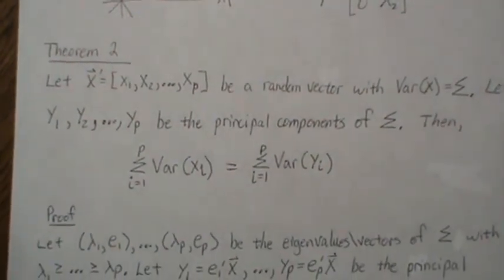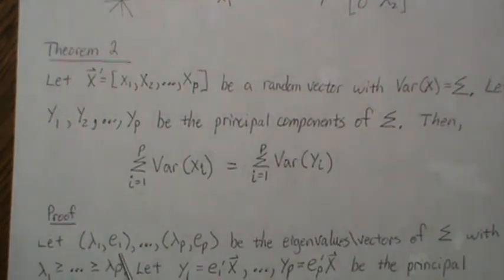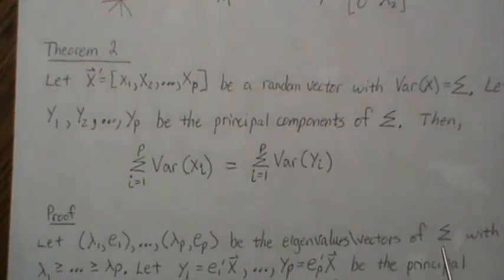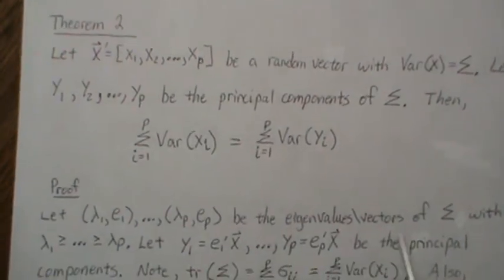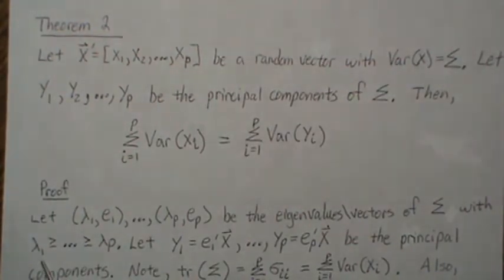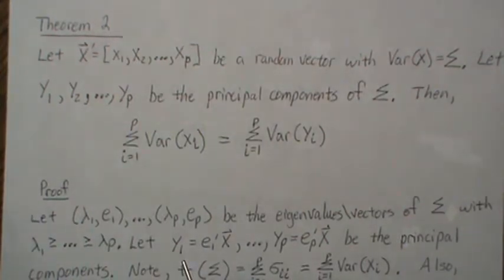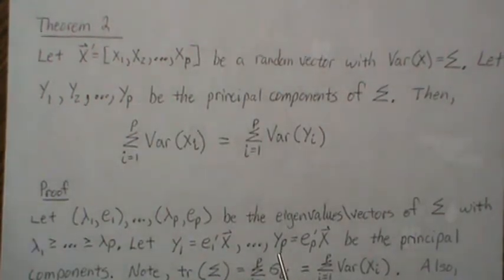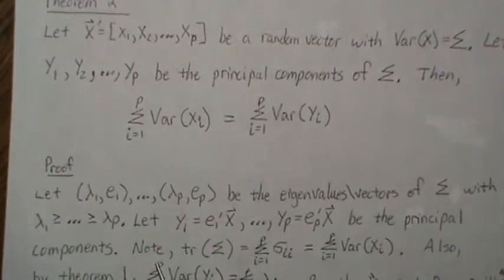The proof is this. We have tuples lambda 1, e1 through lambda p, ep — those are the eigenvalue-eigenvector pairs of the sigma matrix, the variance-covariance matrix. With ordered eigenvalues, we let lambda 1 be the largest and lambda p be the smallest. Then y1 is the first principal component, derived from the first eigenvector and our x variable, and the p-th principal component is derived similarly.